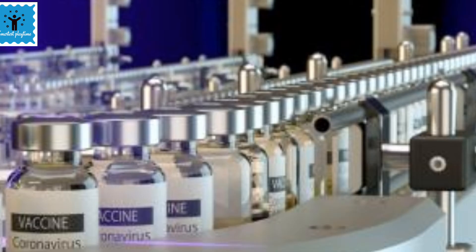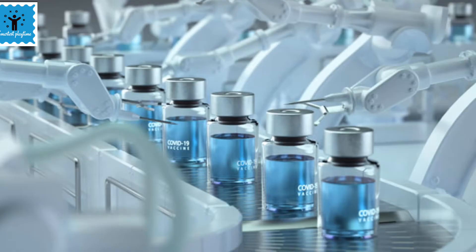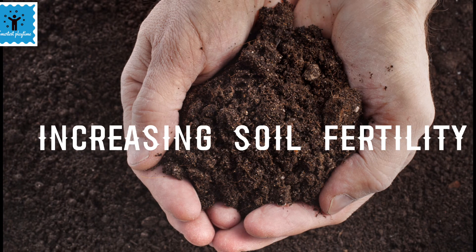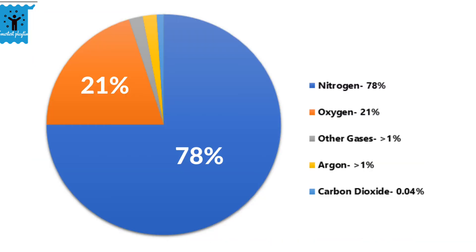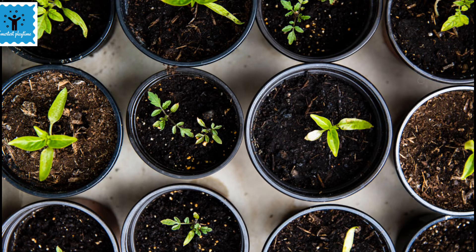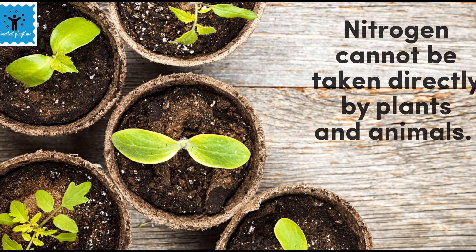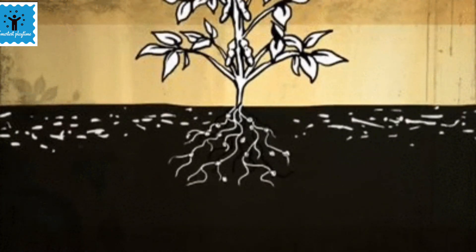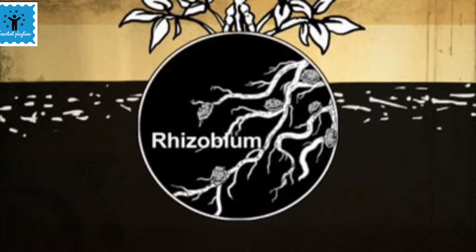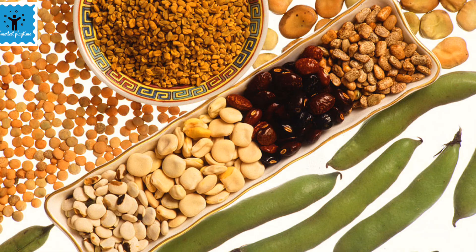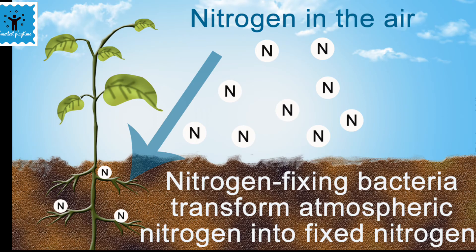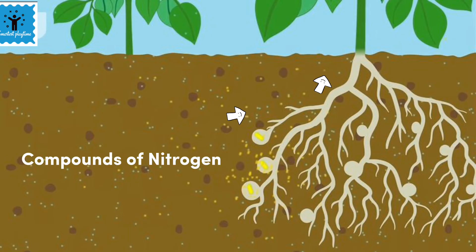Vaccines are also made on a large scale from microorganisms to protect humans and other animals from several diseases. Microorganisms play a vital role in increasing the fertility of the soil. Nitrogen is present in the atmosphere in quite a large quantity, and plants need nitrogen for their growth, but they can't get free nitrogen directly. There is a bacterium called Rhizobium, present in the roots of leguminous plants such as pulses, beans, and peas. Bacteria and blue-green algae fix the nitrogen present in the atmosphere and convert it into usable nitrogen compounds.